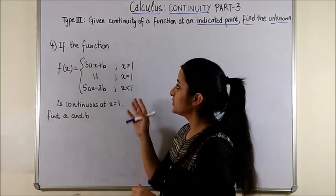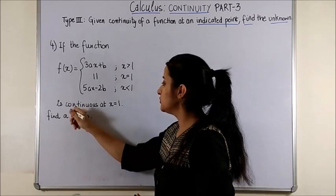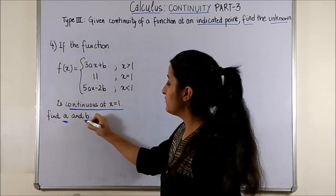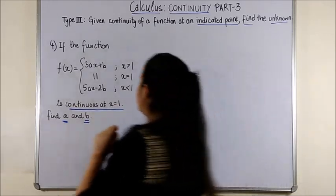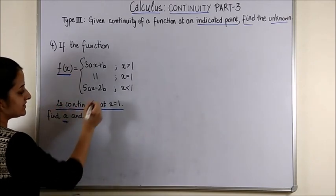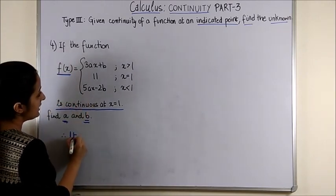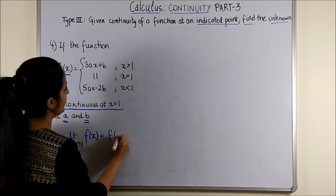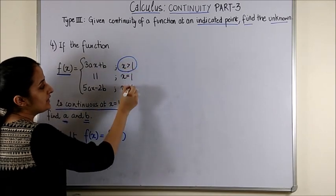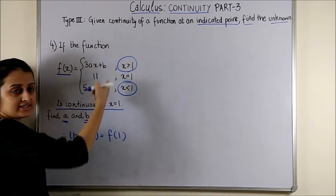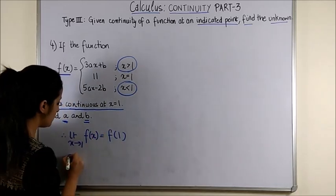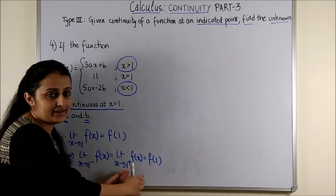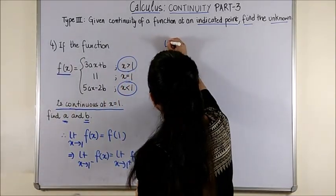Look at the fourth question. So we are given the function is continuous at x equal to 1 and this time we have two unknowns to be found. So starting with the definition you know fx is continuous at x equal to 1 therefore limit x tending to 1 of fx is equal to f of 1. Now as you have as you would have noticed for x greater than 1 and less than 1 there are two different functions. So we would have to express the limit in terms of LHL and RHL. Now substituting these values.